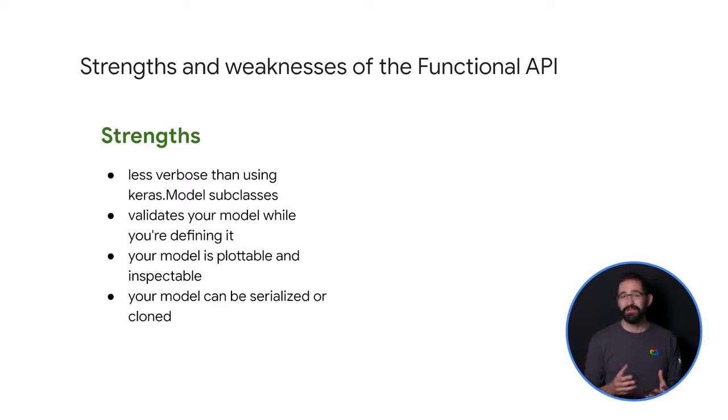This guarantees that any model that you build with a functional API will run. All debugging, other than conversions related debugging, will happen statically during the model construction and not at execution time. This is similar to type checking in a compiler. Your functional model is plottable and inspectable. You can plot the model as a graph. And you can easily access intermediate nodes in this graph. For example, to extract and reuse the activations of intermediate layers.